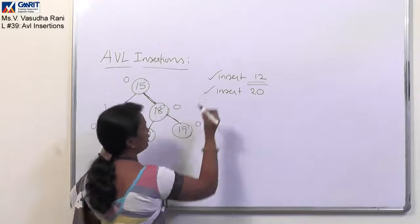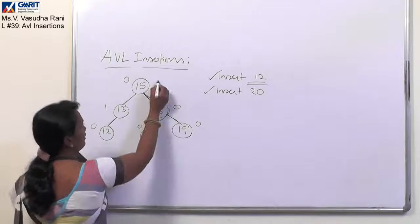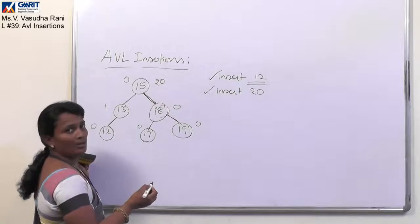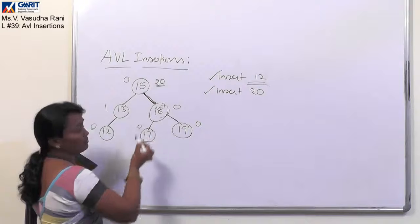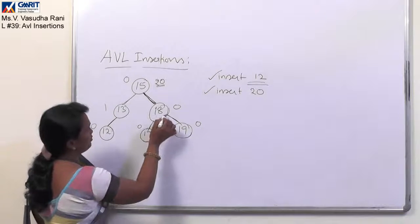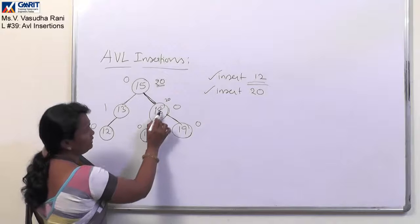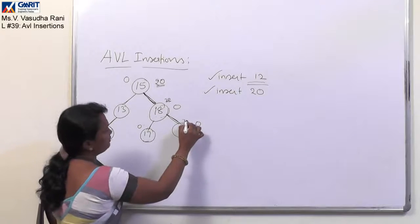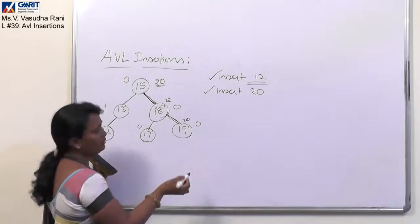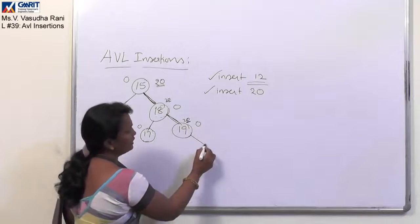But going with the second one, insert 20. So again, how do we insert 20? 20 has to be compared with the root node as it is having more value. We have to go in the right direction, right subtree, and 18 is compared with 20. Again it is having more value, so it is right.